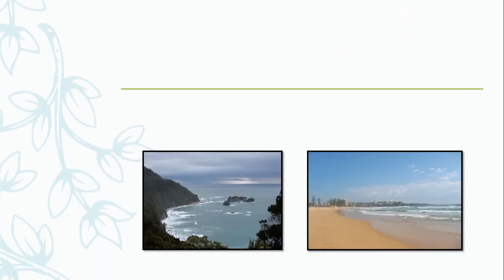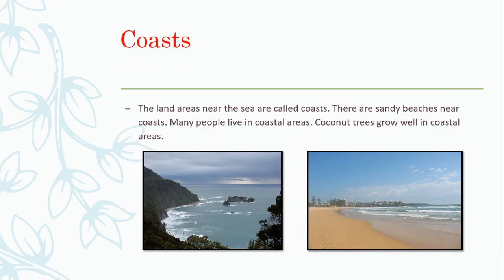Now, can you guess the next type of land by looking at these pictures? Yes, you are correct. It was quite difficult but you passed it. It is coasts. Now, what are coasts? The land areas near the seas are called coasts. There are sandy beaches near coasts. Many people live in coastal areas. Coconut trees grow well in coastal areas.